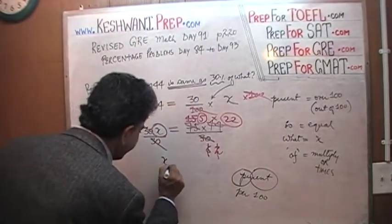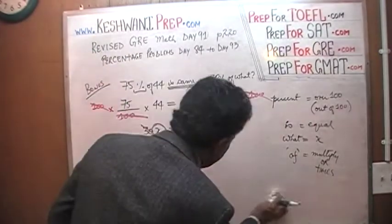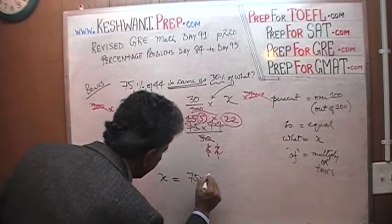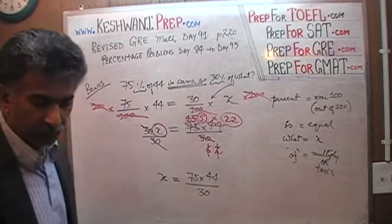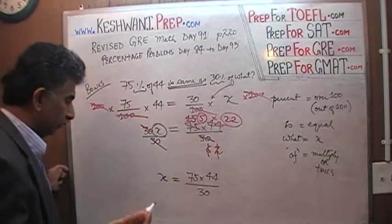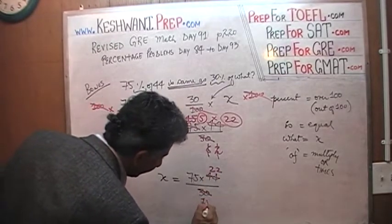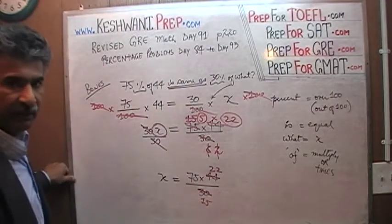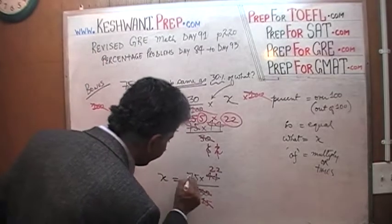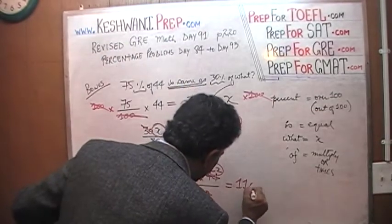Let me do it one more time so it's not crowded. X equals 75 times 44 over 30. Divide top and bottom by 2: 44 becomes 22, 30 becomes 15. Divide top and bottom by 15: how many fifteens in 75? 150 has 10 fifteens, therefore 75 has 5 fifteens. We get 5 times 22, which is 110. Our final answer is 110.